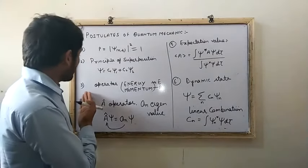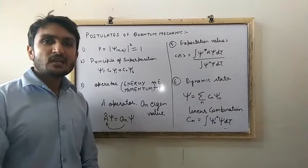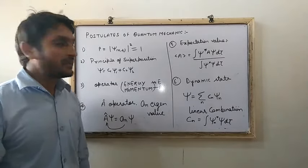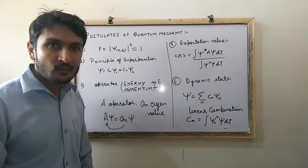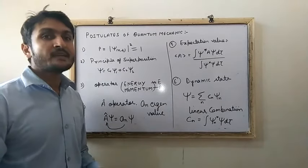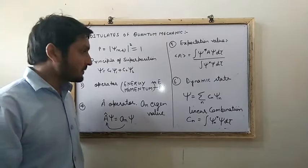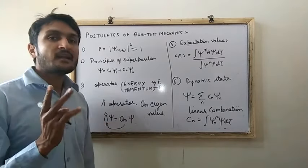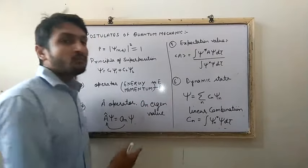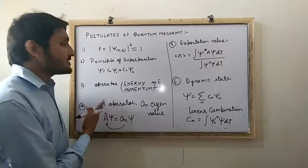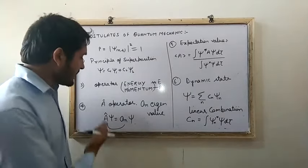The next postulate is about operators. Every variable contains a linear operator, like an energy operator and a momentum operator. In quantum mechanics, every variable is defined or operated by an operator. There are two main linear operators: the energy operator and the momentum operator. This is the third postulate of quantum mechanics.